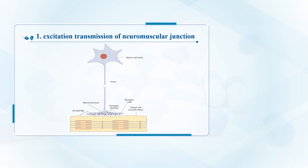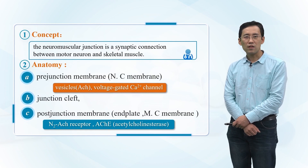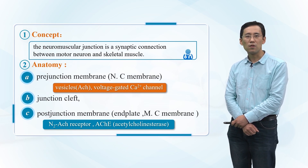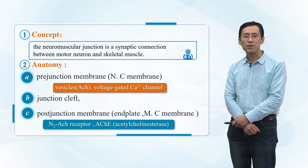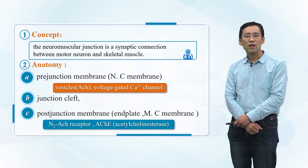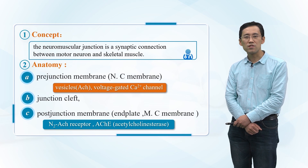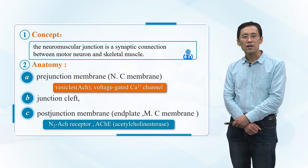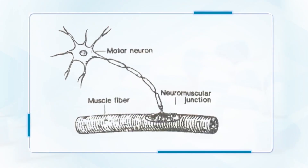Now let's start with excitation transmission of the neuromuscular junction. The neuromuscular junction is a synaptic connection between a motor neuron and skeletal muscle. Its anatomy includes the pre-junction membrane, which is the neural cell membrane, containing vesicles for acetylcholine secretion and voltage-gated calcium channels, as well as the junction cleft and post-junction membrane. This is an image of a motor neuron, the muscle fiber, and the neuromuscular junction.